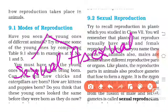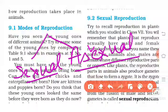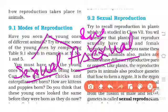I will give you an intro. In asexual reproduction, it is not necessary that both sexes are required — whether male or female. Only a single organism is involved.